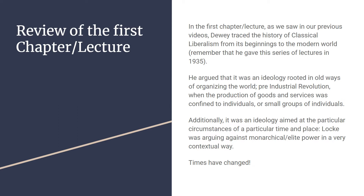In the first chapter — and remember he gave this as a series of lectures, so I always remind you of that by saying it's a chapter for us but it was a lecture as he gave it — Dewey traced the history of classical liberalism from its relevant beginnings, which Dewey argued started with Locke, to the modern world. He's giving this lecture in 1935, a world that's a lot like ours but also very different. So one exercise we might want to do is think about what's changed in the interim.